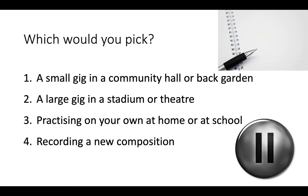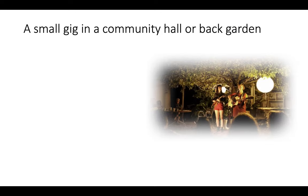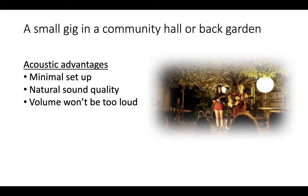Let's have a look at some of the ideas that I had when going through these different scenarios. Like I say, not necessarily right and wrong answers — these are just my thoughts, you might have had some different ideas. A small gig in a community hall or in a back garden: the advantages of an acoustic setup here — very little setup required, you don't need to get a PA system out, it doesn't matter if you haven't got electricity in your garden. You can just get your instruments out and start making music. You get that nice natural sound quality, an intimate sound that's quite nice in a small setup, and the volume won't be too loud since you haven't got it going through an amp, so you shouldn't disturb your neighbours too much.